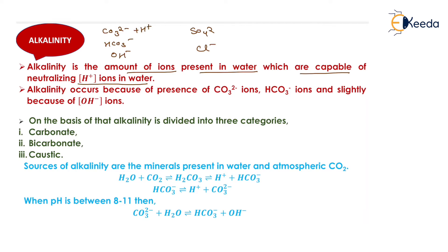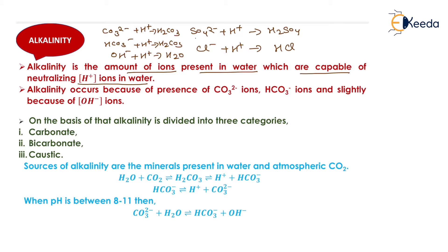SO₄²⁻ and Cl⁻ create very strong acids, meaning they do not neutralize H⁺ ions. Therefore, SO₄²⁻ and Cl⁻ are not included in the calculation of alkalinity. Only carbonate, bicarbonate, and OH⁻ are used in the alkalinity calculation, because carbonate and bicarbonate form very weak acids, and OH⁻ completely neutralizes H⁺ ions by forming H₂O.